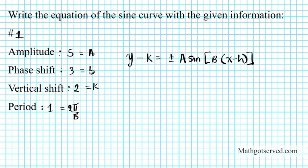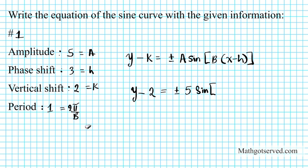I'm going to put a, h, k, and a directly into my equation. So I'm going to have y minus 2 equals plus or minus 5 sine. Now the hard part — what on earth is b? I know that 2π over b equals 1.